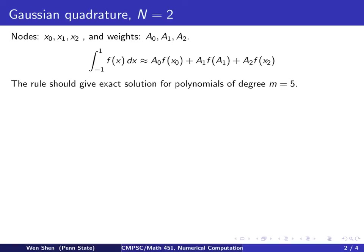Now since the total number of unknowns here is 6, this means the rule should give exact solution for polynomials of degree less than or equal to 5. So the degree of precision, m, equals 5 here.